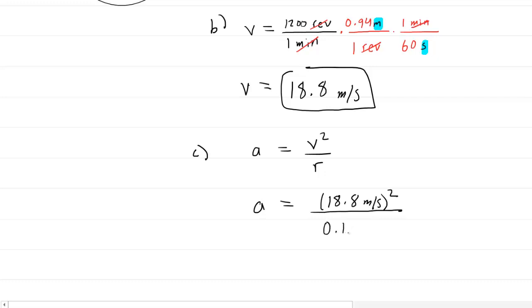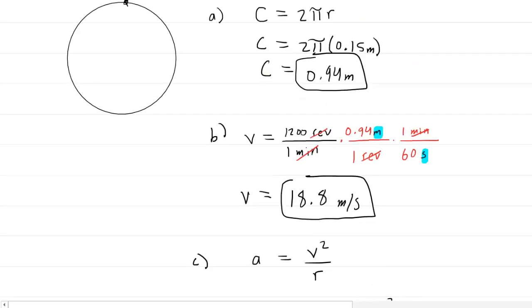And again, that radius was 0.15 meters. So we can punch this into our calculators. We're going to get about 2,369, and then we're going to end up with meters per second squared. So this would be the correct answer for the acceleration in part C.